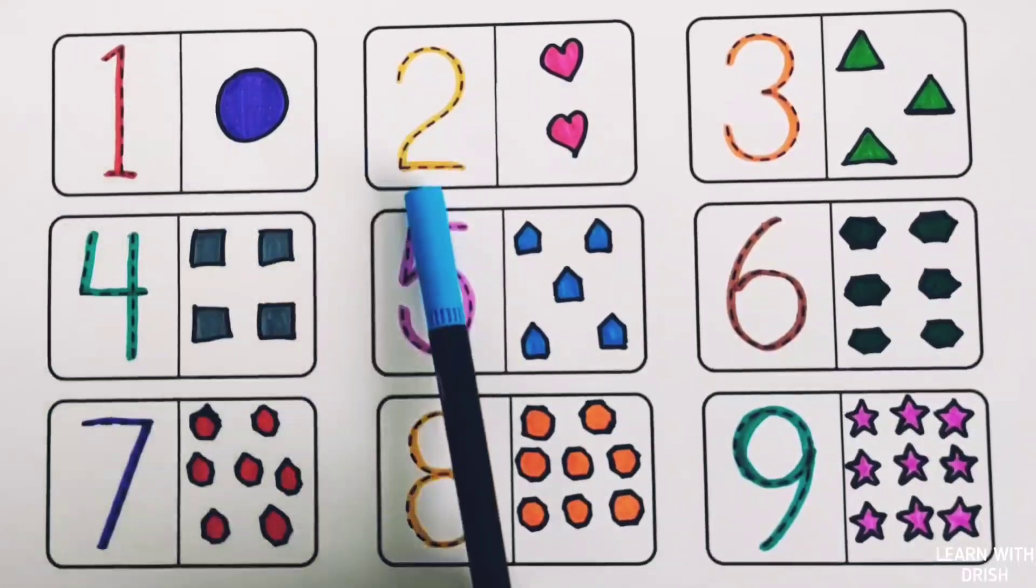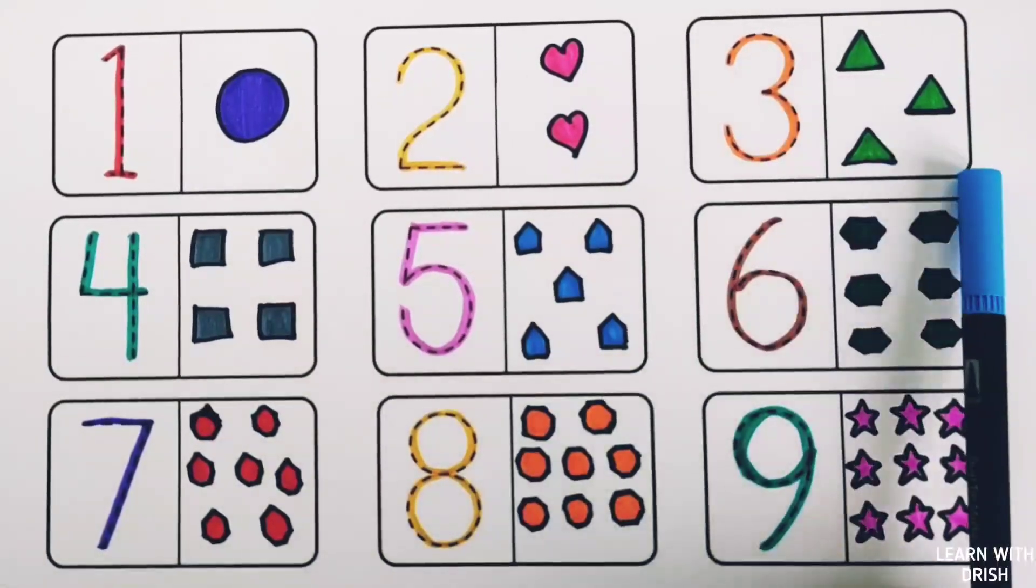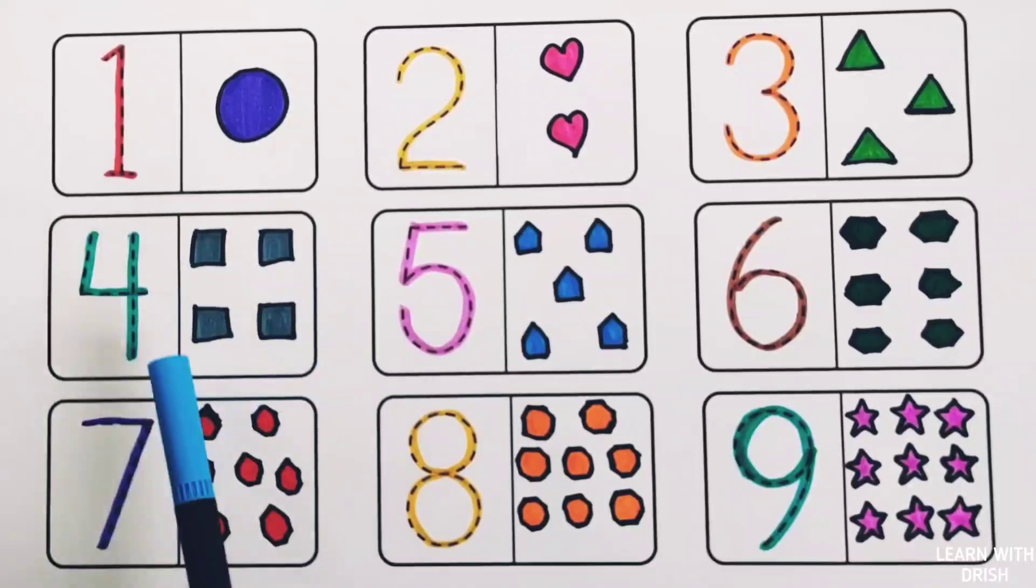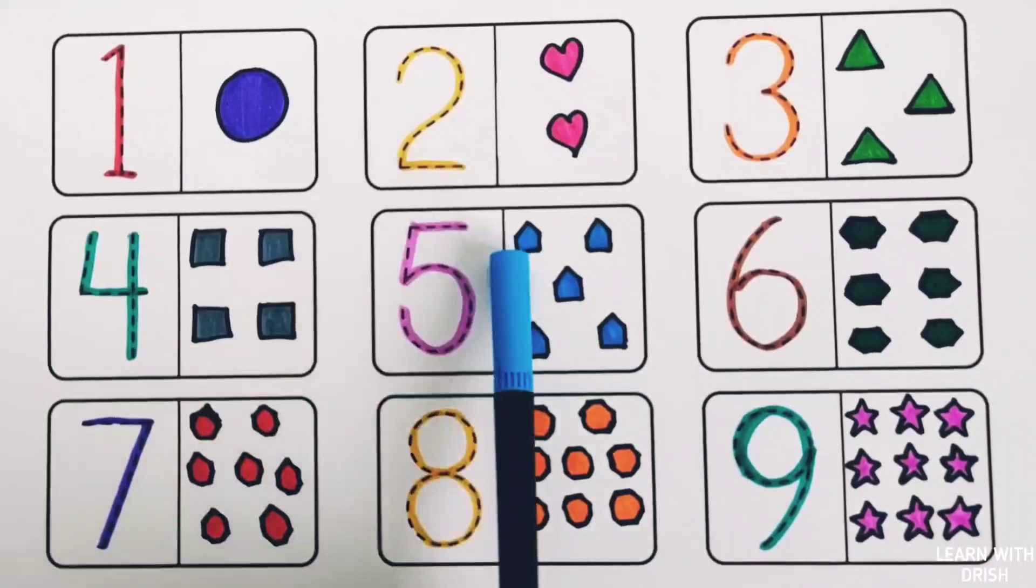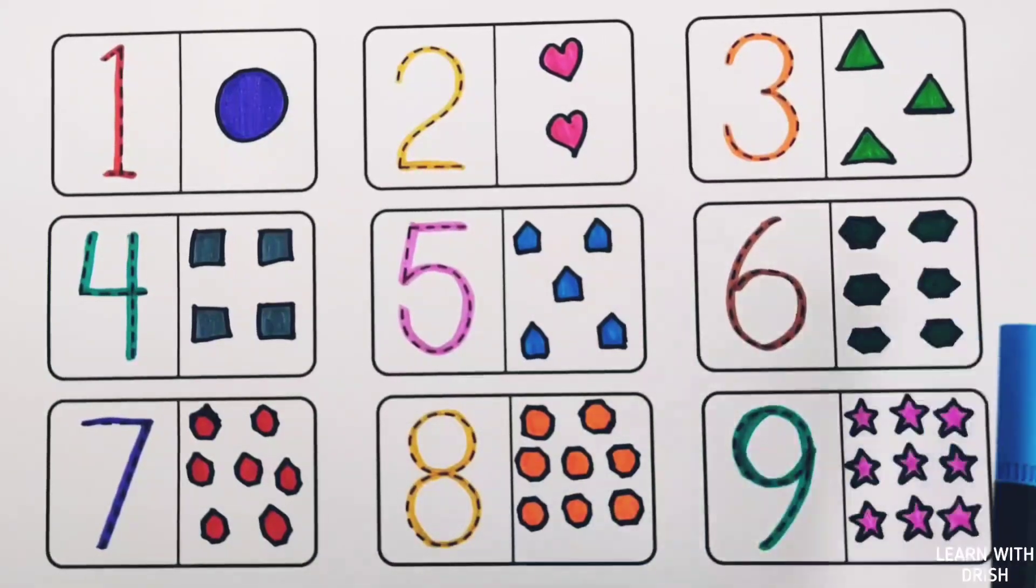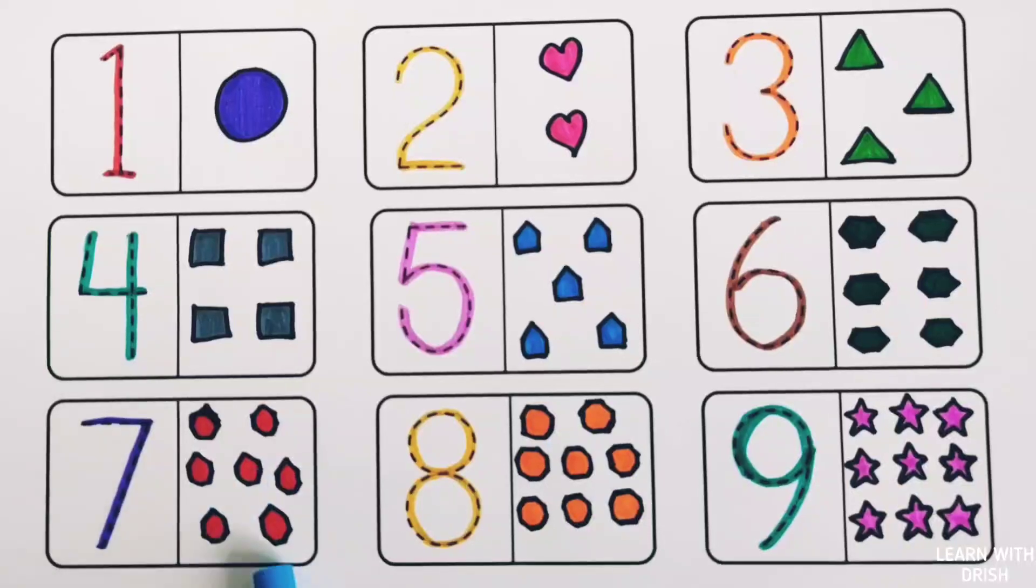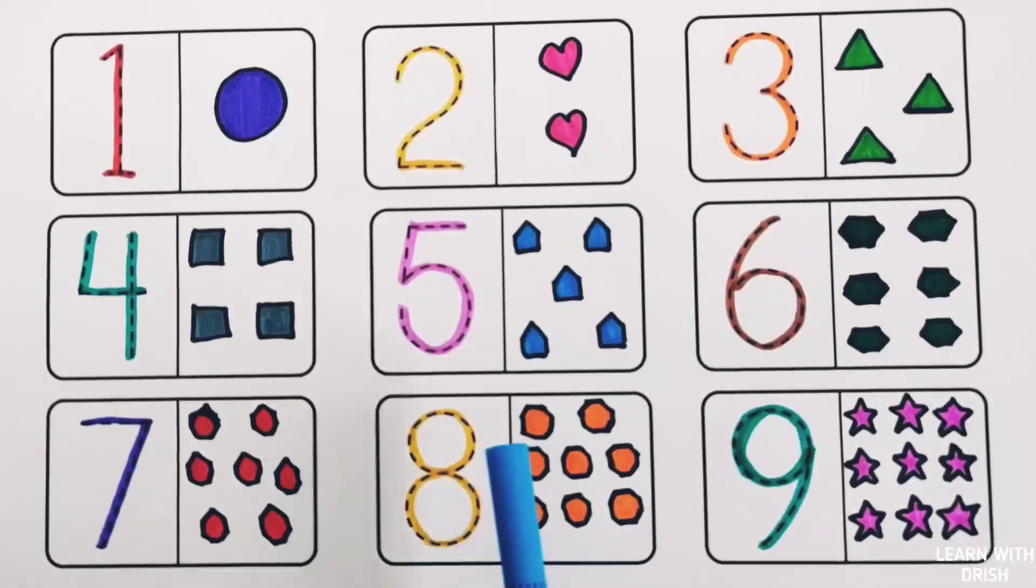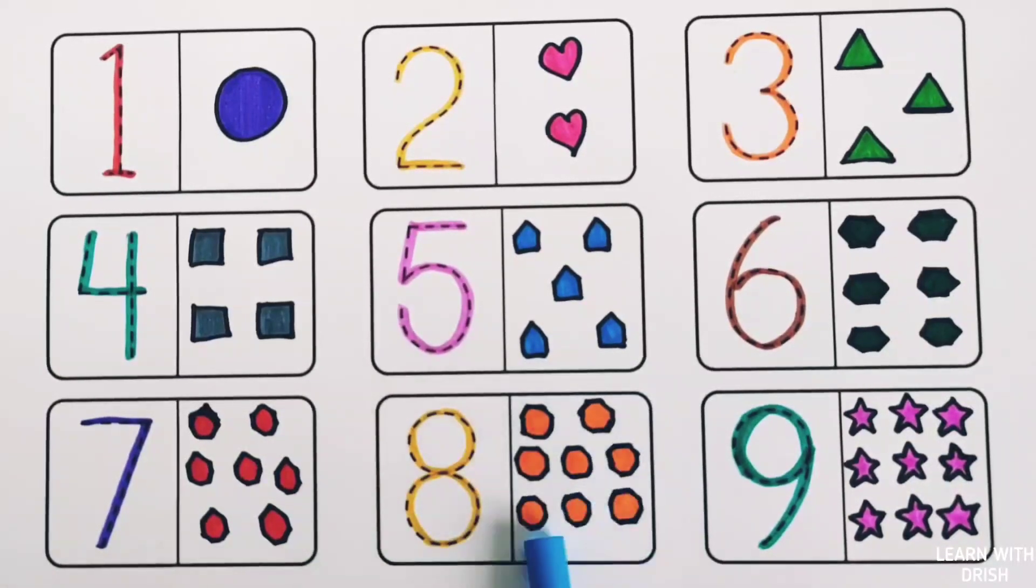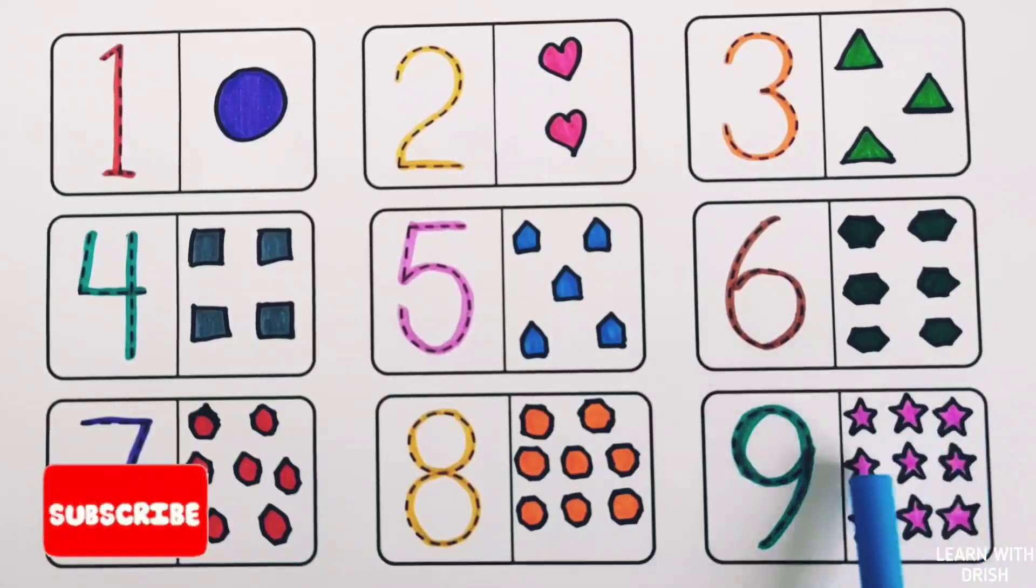One, one circle. Two, one, two, two hearts. Three, one, two, three, three triangles. Four, one, two, three, four, four squares. Five, one, two, three, four, five, five pentagons. Six, one, two, three, four, five, six, six hexagons. Seven, one, two, three, four, five, six, seven, seven hexagons. Eight, one, two, three, four, five, six, seven, eight, eight octagons. Nine, one, two, three, four, five, six, seven, eight, nine, nine stars.